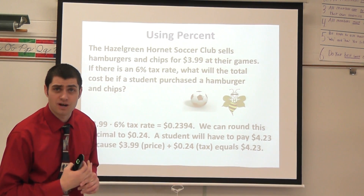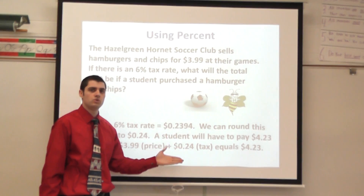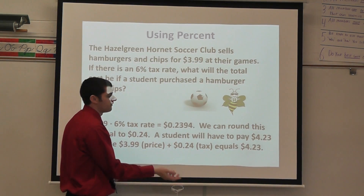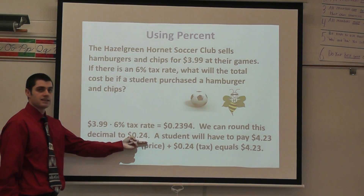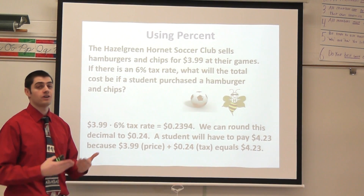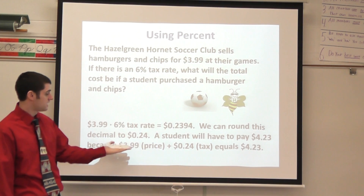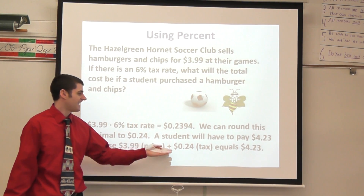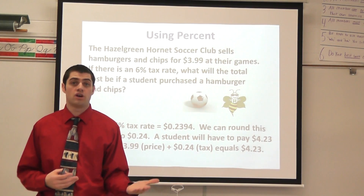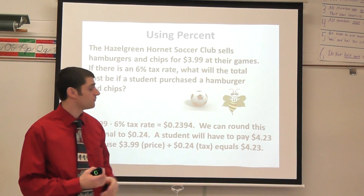Well, what does that mean when I'm talking about money? I know usually in money there are only two spots after the decimal point, so I can round this to the nearest cent, which would be the hundredths place value. I look at the 3 here, I look at the 9 — I can round this up. So this becomes $0.24. That tells me the amount of tax I'm going to have to pay on my purchase. So I know a student is going to have to pay $4.23, because I took $3.99 — the original price — and added the tax of $0.24, which equals $4.23.